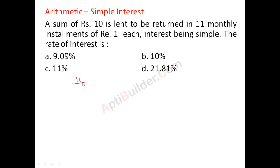That means instead of 11 months, 11 by 2 months is the time. And interest was 1 rupee on 10 rupees, that means 10%. So 10% is the interest for 11 by 2 months.